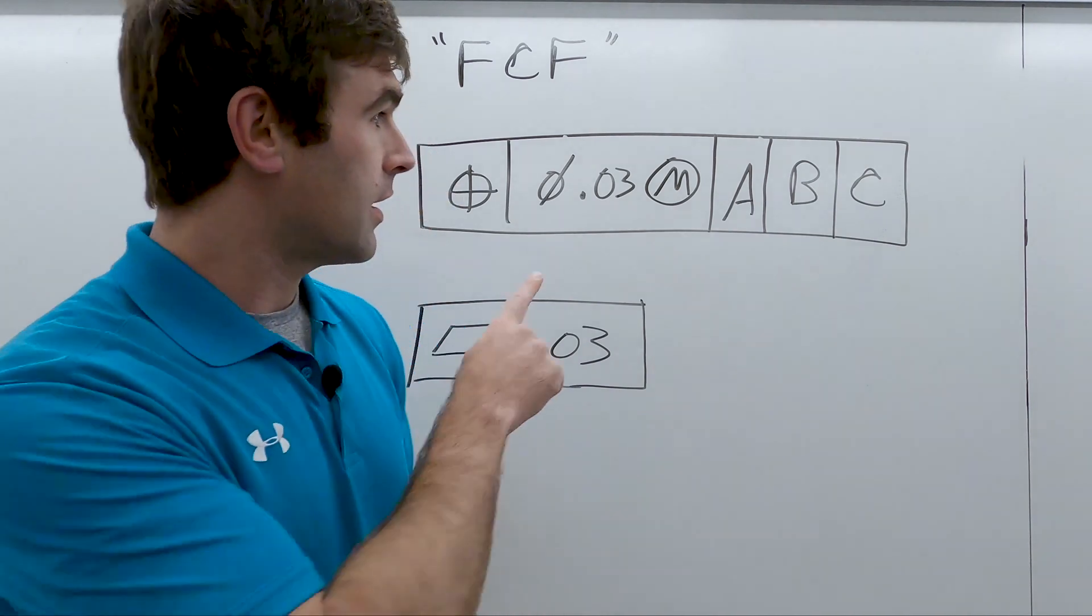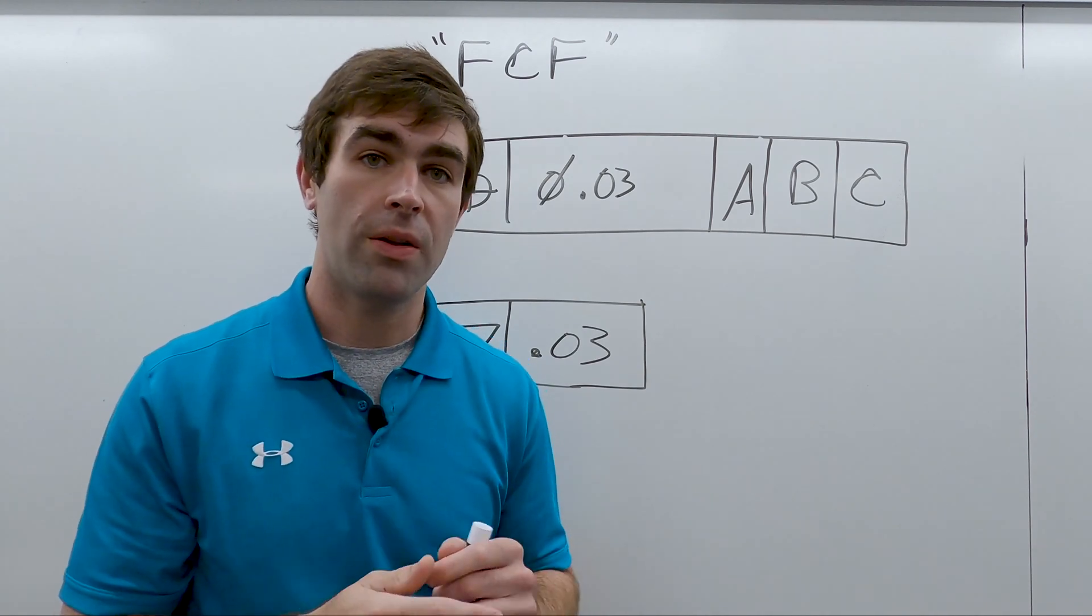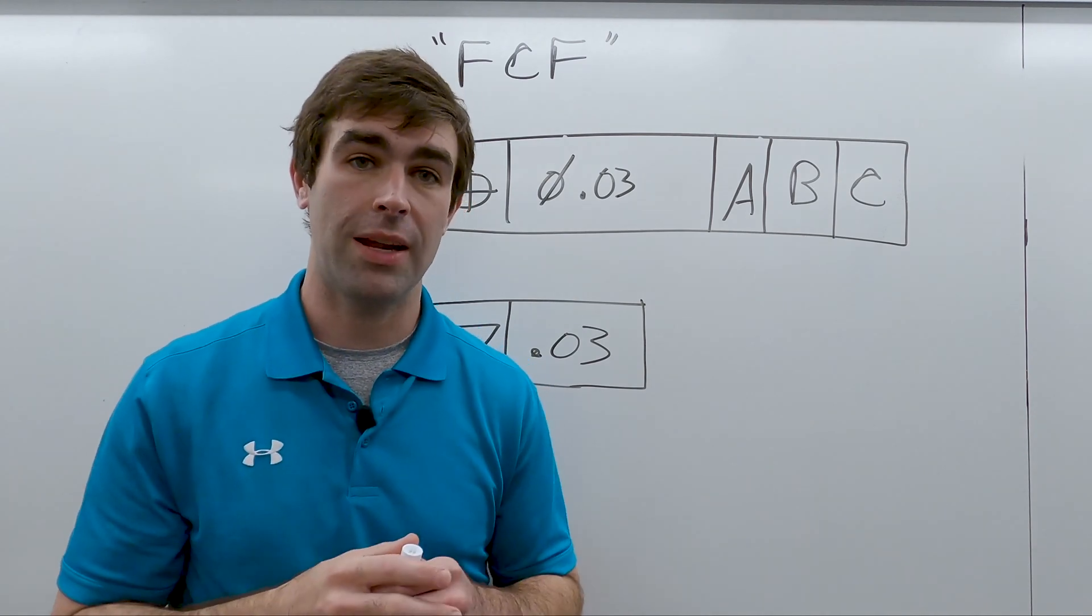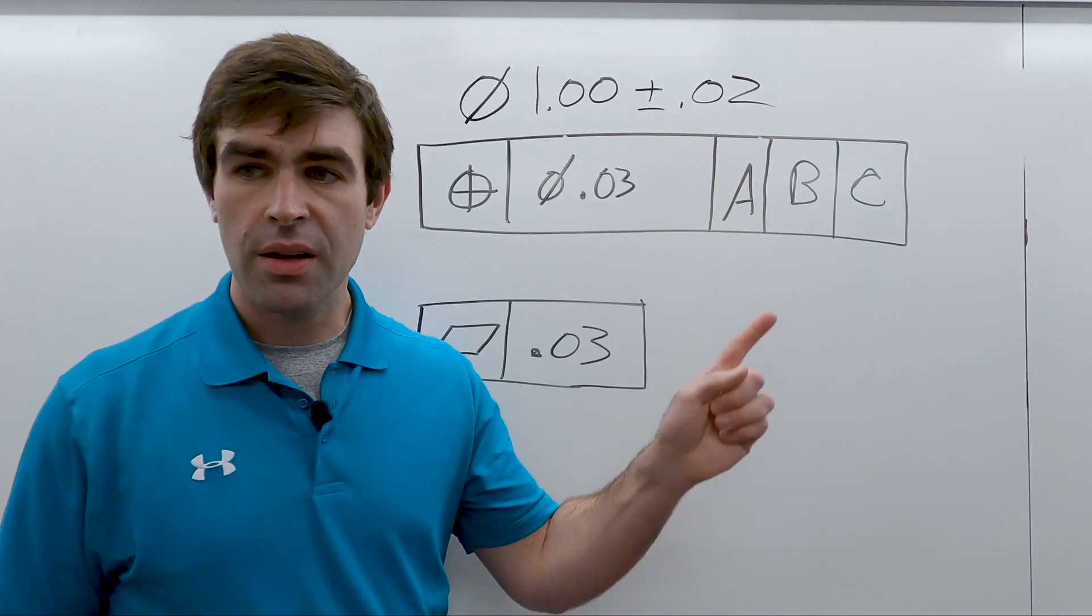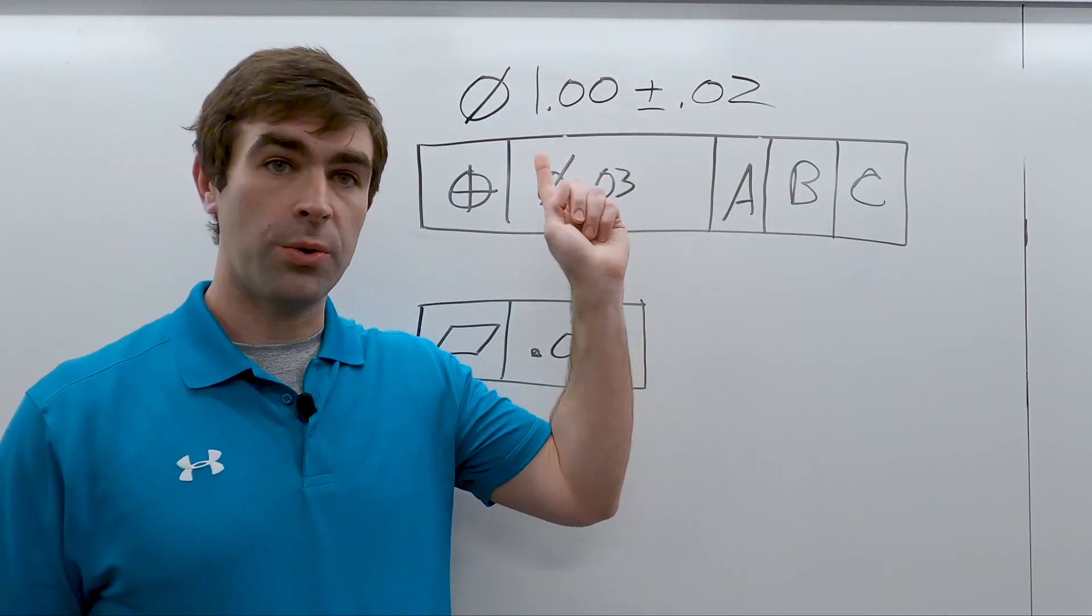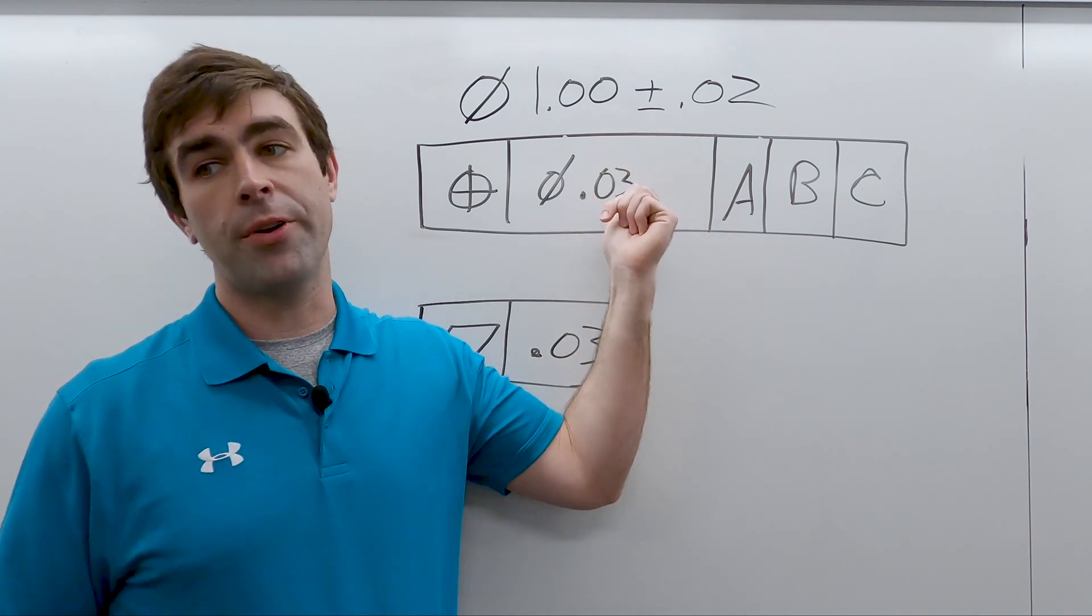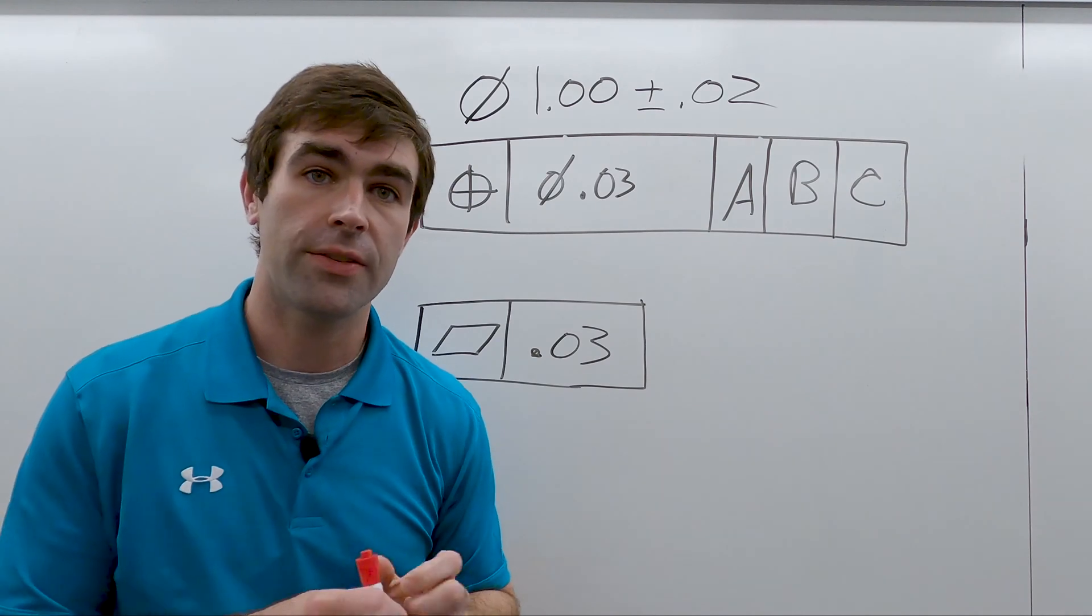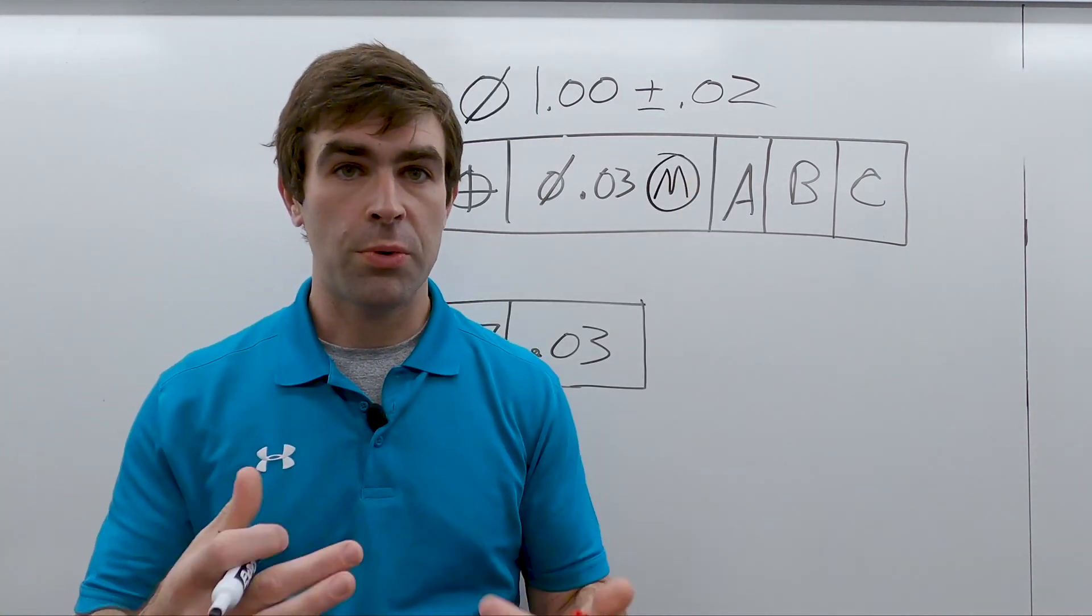If there's nothing here, that tolerance applies no matter how big or small the actual feature came in at. So if this is a hole, if the hole comes in at 1.02, you have 30 thou of location tolerance. If it comes in at 0.98, you have 30 thou of location tolerance.